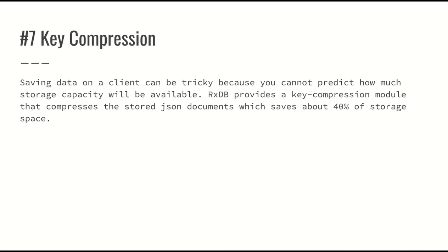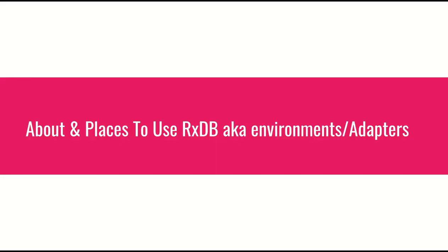Feature number seven is key compression. Saving data on the client can be tricky because you can't predict how much storage capacity will be available. RxDB provides a key compression module that compresses stored JSON documents, saving about 70 percent of storage space — which is a very nice feature. I'll stop here and continue this chapter in the next video. Thank you.